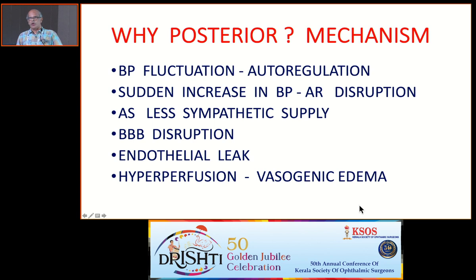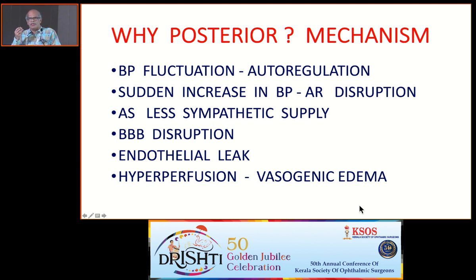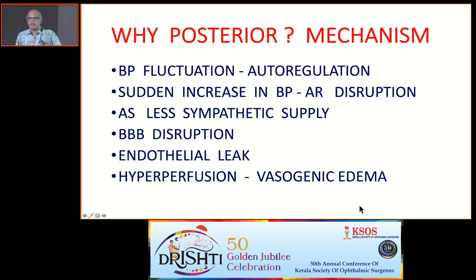Why posterior? Why is it 95% posterior? There is autoregulation that controls blood flow into the brain. In the posterior parieto-occipital area, there are very few sympathetics. So whenever there is a high spike in blood pressure, autoregulation fails, leading to vasodilation and exudation — that is the mechanism. This vasogenic edema will subside if you treat these cases early. That is why awareness, early detection, and either treatment or referral are critical.